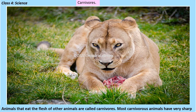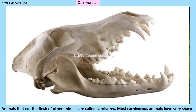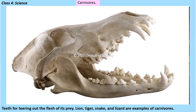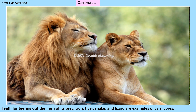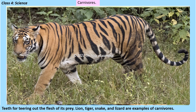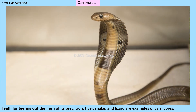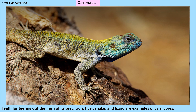Animals that eat the flesh of other animals are called carnivores. Most carnivorous animals have very sharp teeth for tearing out the flesh of their prey. Lion, tiger, snake, and lizard are examples of carnivores.